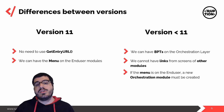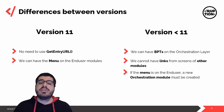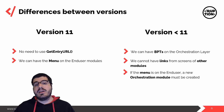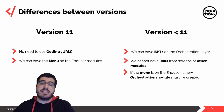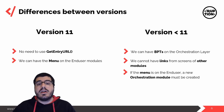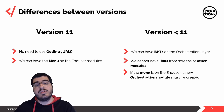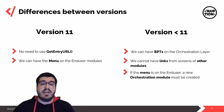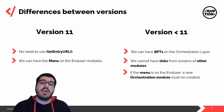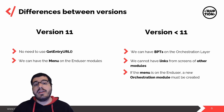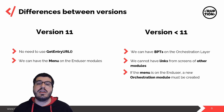For versions prior to version 11, on the other hand, you have BPTs on the orchestration layer as we discussed earlier — for example, because you need the process to access cross-application information. You also cannot have any links to a screen from a different module, as this would become a violation as explained in the first video. And if the menu is on the end-user module, then the orchestration layer needs to be created with the module in it.